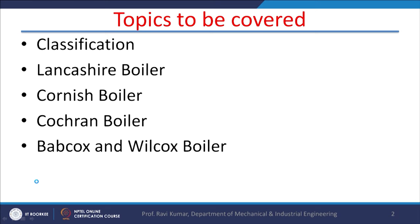In India, more than 60 percent of power generation is through the burning of fossil fuel. The topics to be covered today are: first, classification of steam generators, and then we will discuss the working of a few classical steam boilers — namely the Lancashire boiler, Cornish boiler, Cochrane boiler, and Babcock and Wilcox boiler.